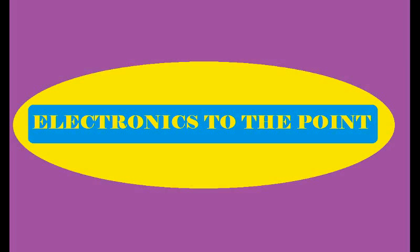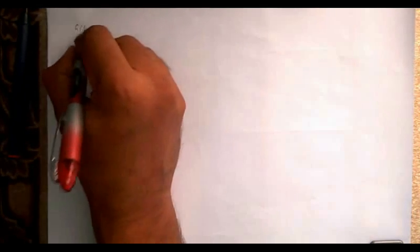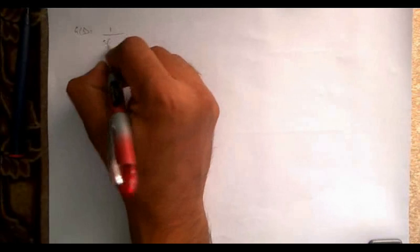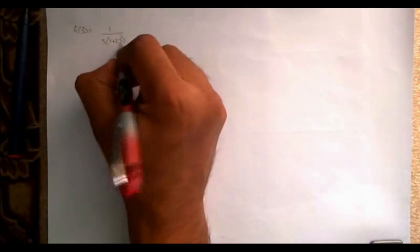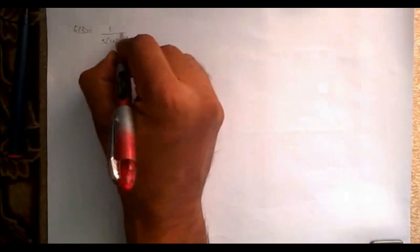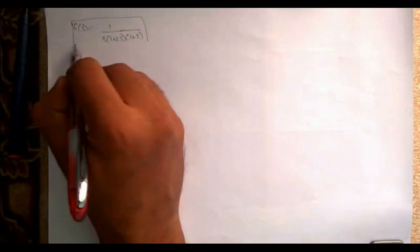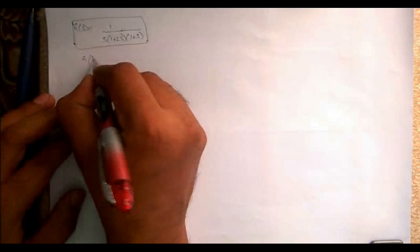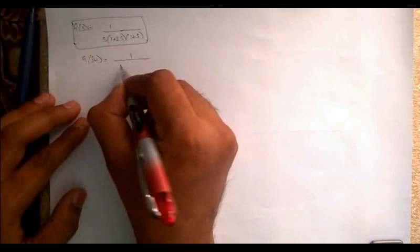Welcome to Electronics to the Point. Let us consider an example and find the gain margin and phase margin, so that we can understand easily the concepts of gain margin and phase margin. Let us consider the open loop transfer function G(s) = 1 / [s(1+2s)(1+s)]. Now, first put s equal to j omega: G(jω) = 1 / [jω · (1 + 2jω) · (1 + jω)].